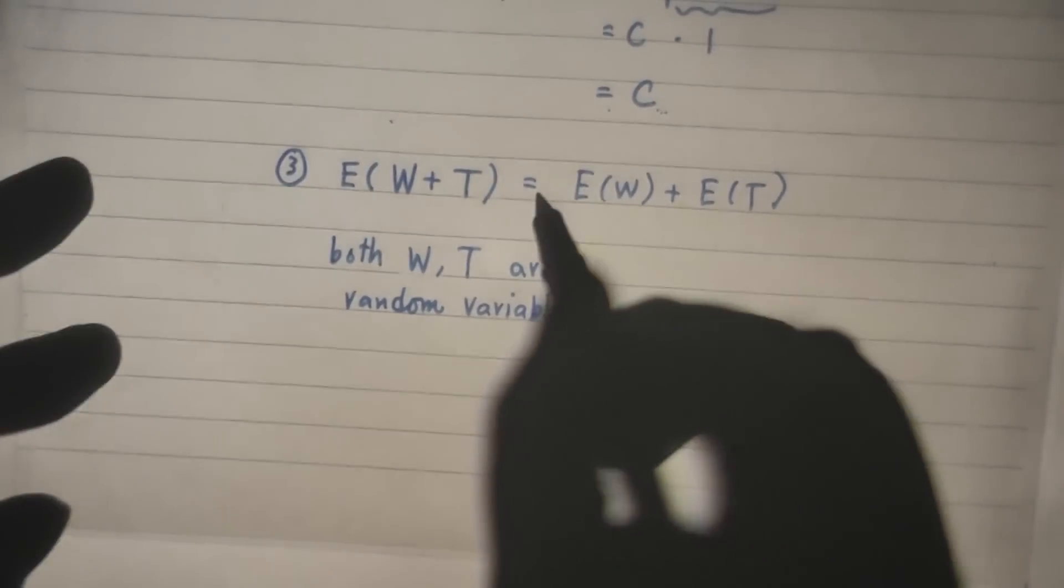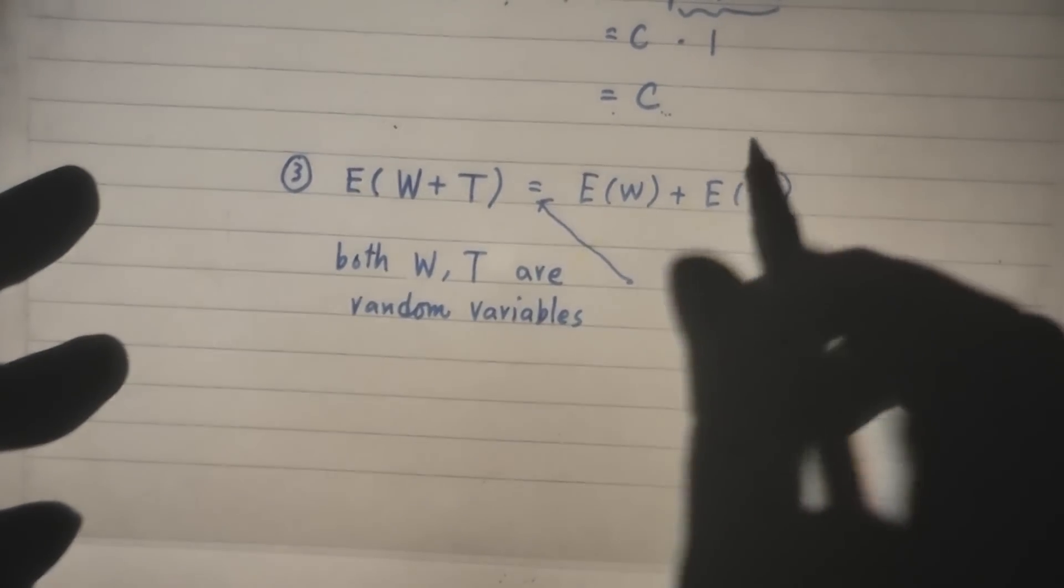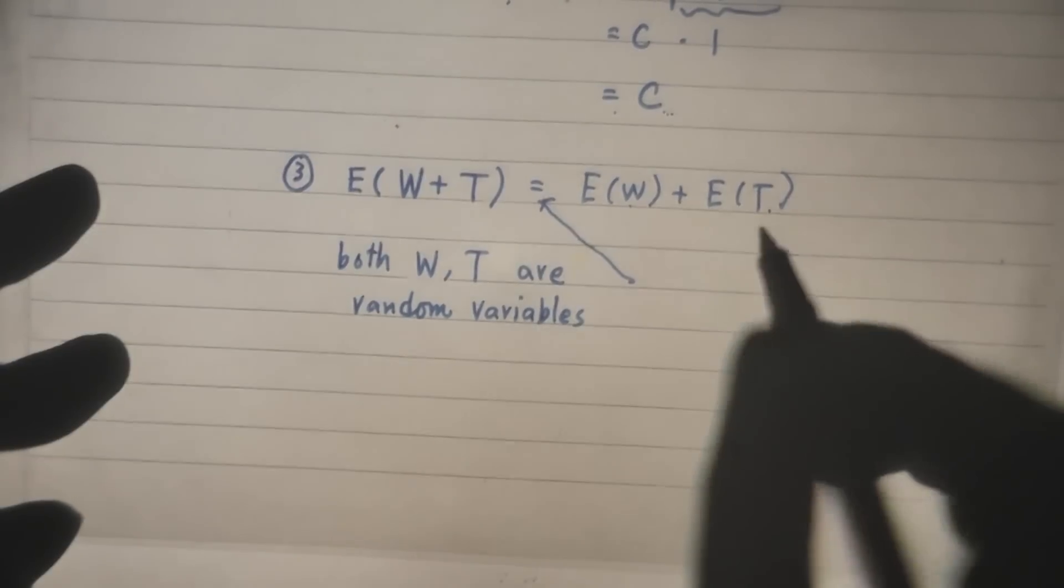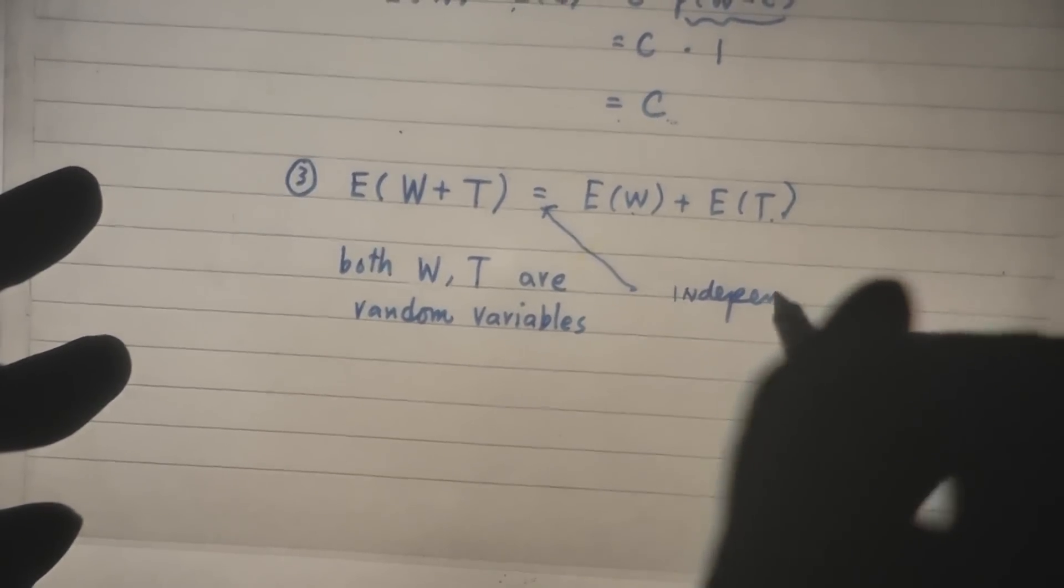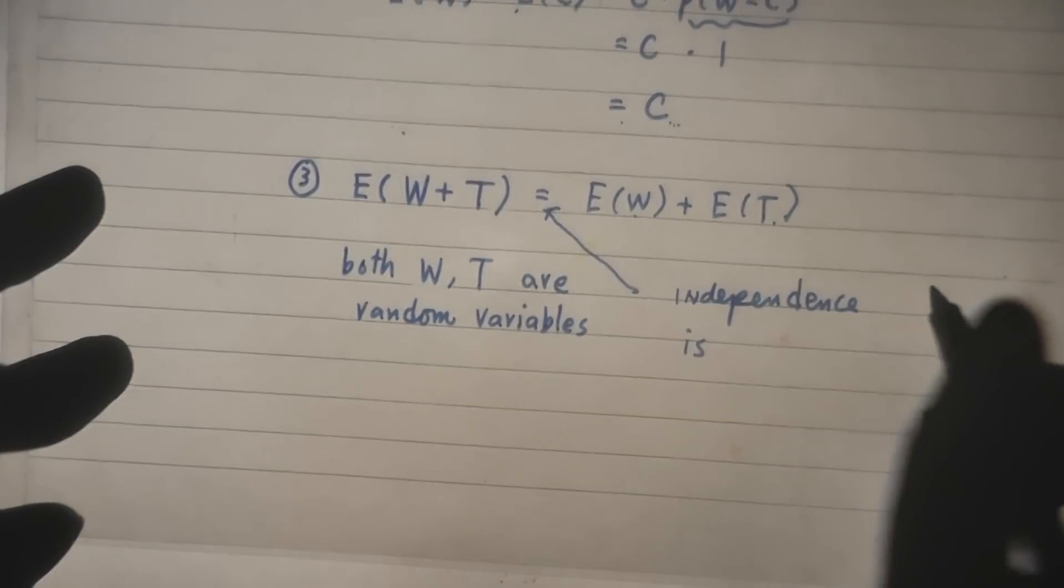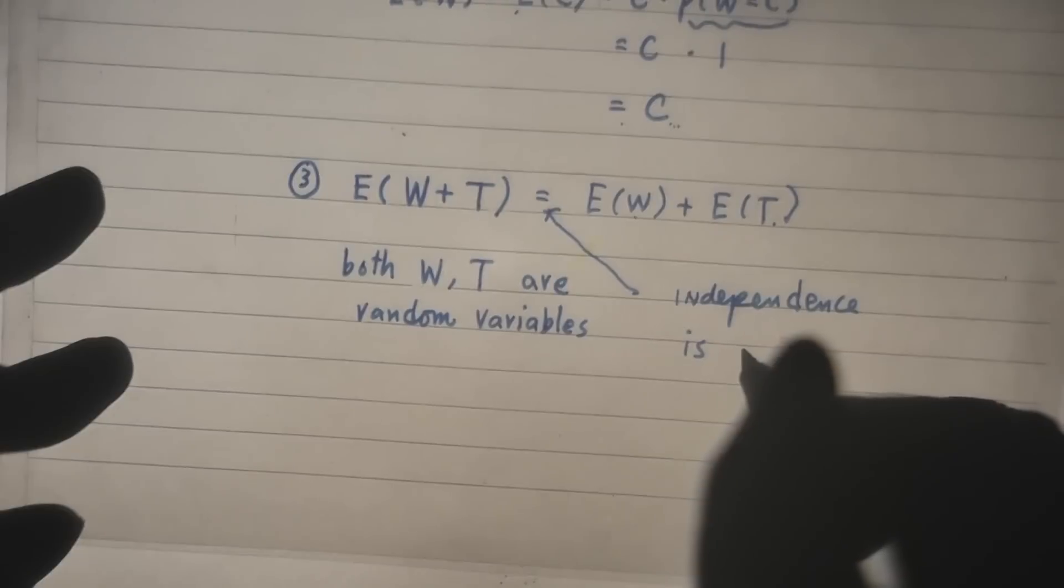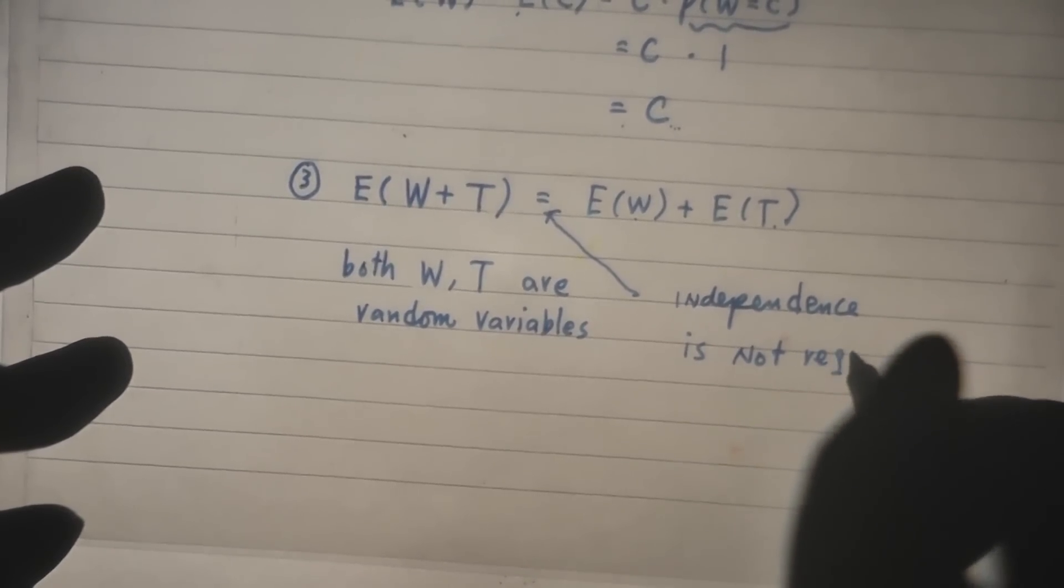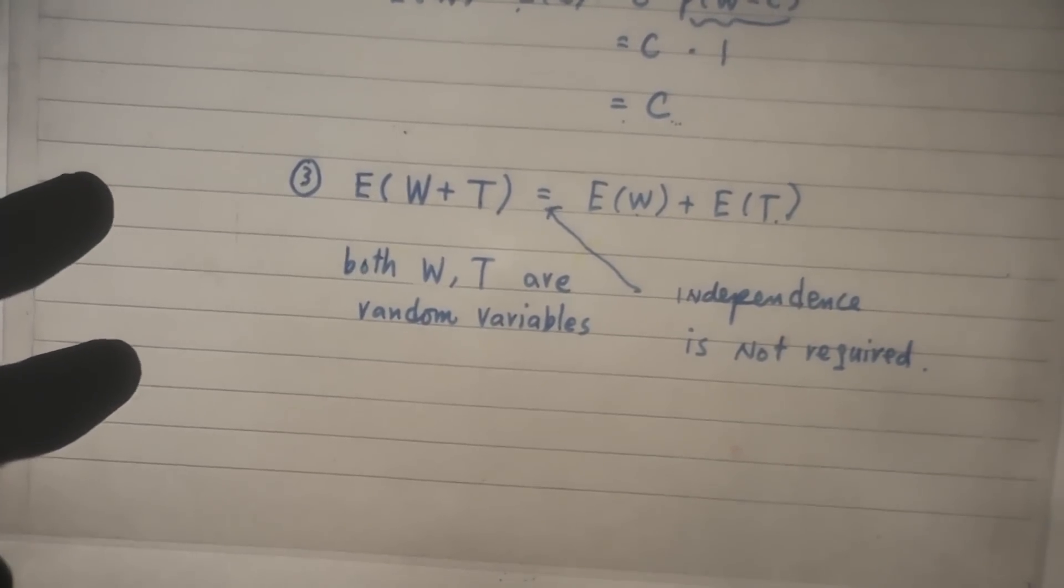Now, the equality can hold even if W and T are not independent. So, this is true, very general. Independent condition. Independence between what? W and T are not required. Independence is not required.